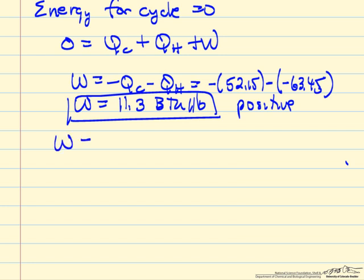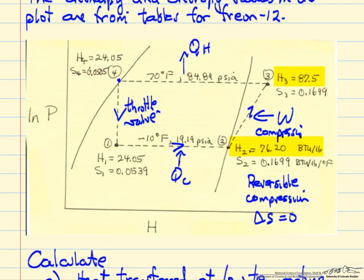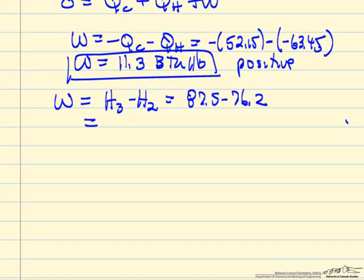As I mentioned, we could also get the work as H3 minus H2. In the refrigeration cycle, all the energy that we add as work goes into increasing the enthalpy. If I read the values from the figure, 87.5 and 76.2, I get of course the same value, 11.3 BTUs per pound.